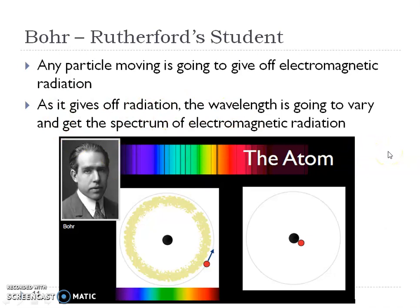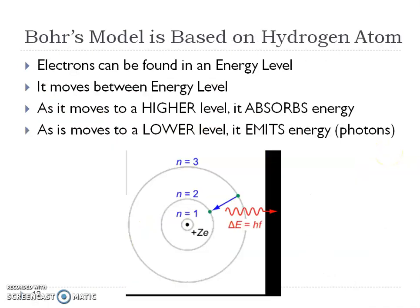And that's why it's called the spectrum of electromagnetic radiation. So in his model, again, is only based off of the hydrogen atom. And remember, hydrogen only has one proton, which means it only has one electron.